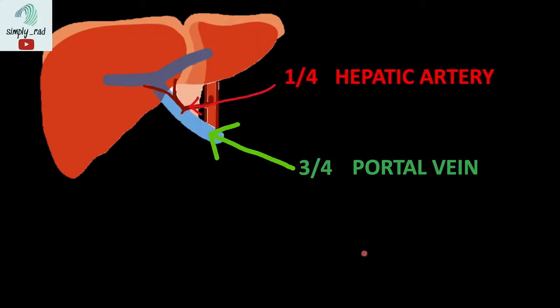Recall that inflow to the liver comes from two vessels: the hepatic artery supplying one-fourth of blood and the portal vein supplying three-fourths of blood. The blood from the hepatic artery arrives first, while the portal vein blood, although greater in volume, comes later.